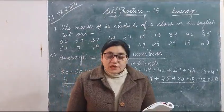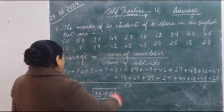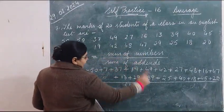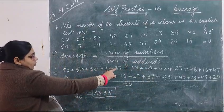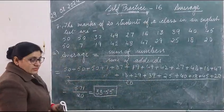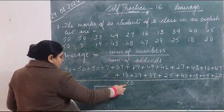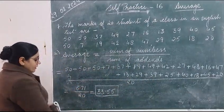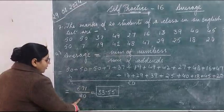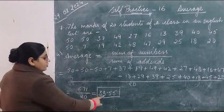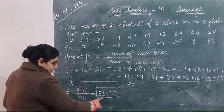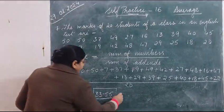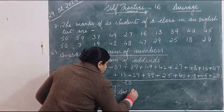Find the average marks of the students of the class. Average equals sum of numbers divided by sum of N. Write down all the 20 marks, test marks divided by 20. When you add all these 20 marks you will get 671 divided by 20. When you divide it, you will get the average marks: 33.55. So this is the average marks.